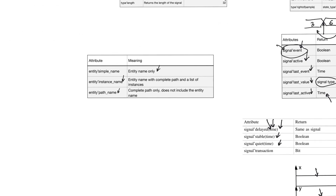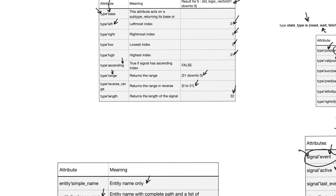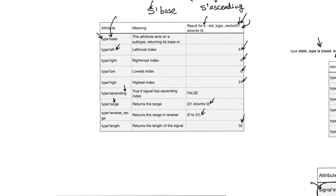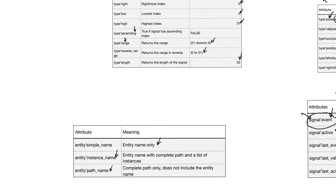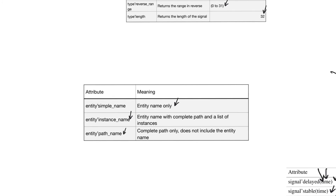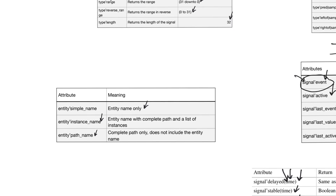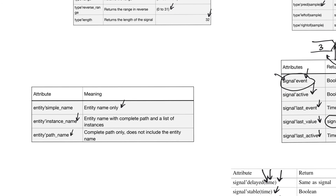Attributes that act on data types and return constant values at synthesis time are generally safe to use. Attributes related to entity names are usually used in assert statements for debugging and are typically ignored by the synthesizer. The general advice is to use attributes carefully: if you know the result of using an attribute, use it; if you cannot predict it, avoid it.